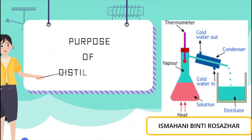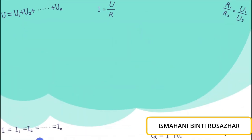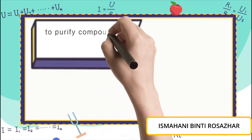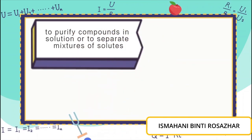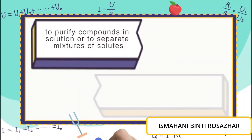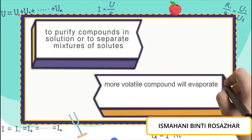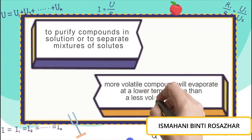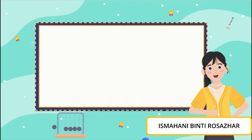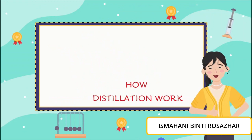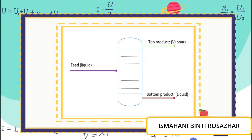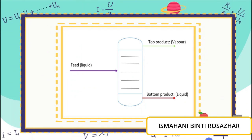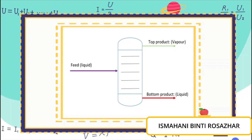The purpose of distillation is to purify compounds in solution or to separate mixtures in solution. For example, different compounds have different boiling points. This property means more volatile compounds will evaporate at a lower temperature than a less volatile compound. Basically, how distillation works is when feed material such as liquid enters the distillation apparatus, it will separate into two streams: a vapor stream at the top and a liquid stream at the bottom, while being heated.